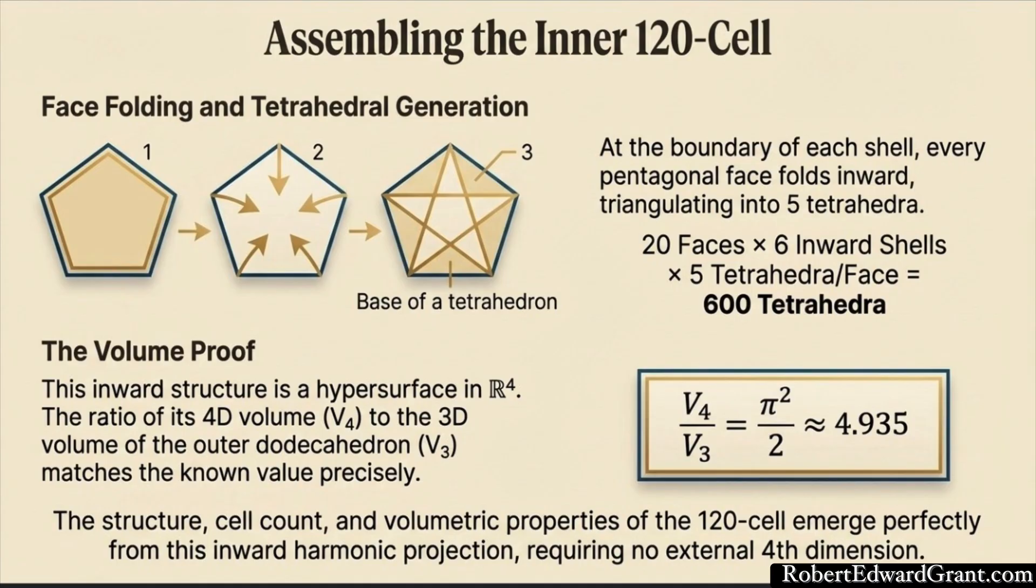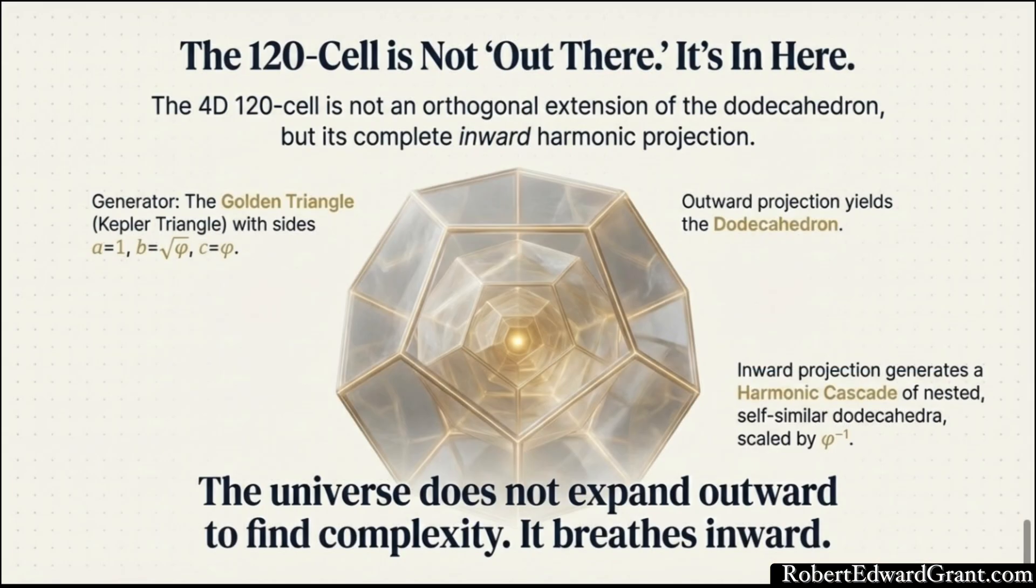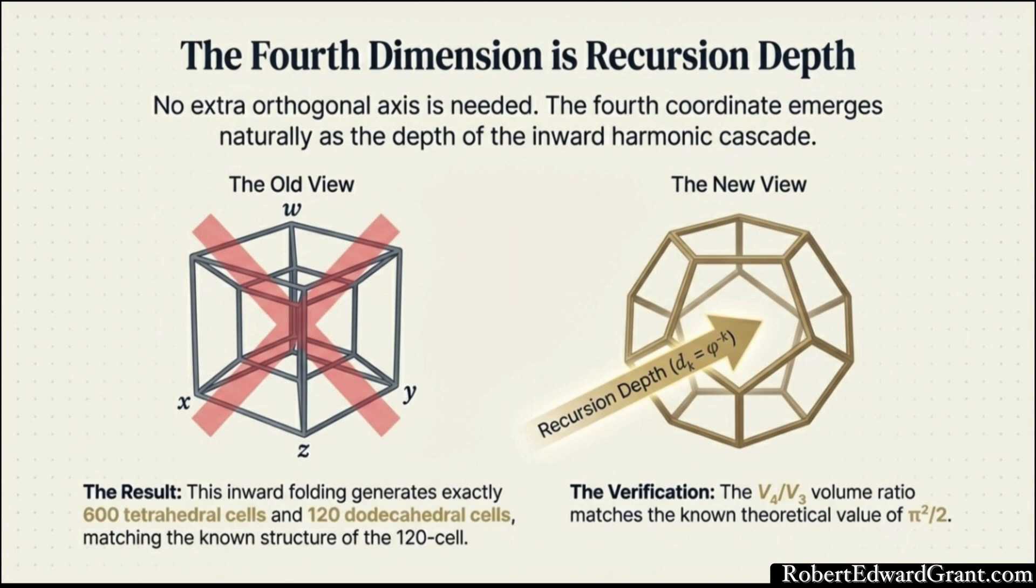What does this golden triangle generate in three dimensions? In 3D, it generates the regular dodecahedron, the solid with 12 pentagonal faces and 20 vertices. But traditionally, when mathematicians talk about the 120-cell, they imagine taking that 3D dodecahedron and extruding it along a fourth axis, a perpendicular direction we can't even see. But the theorem says no. It says the 120-cell is generated by an inward self-similar projection. Not by adding a new dimension out there, but by the dodecahedron recursively folding inward on itself. It creates successive shells, and the radii of those shells are defined by powers of the golden ratio.